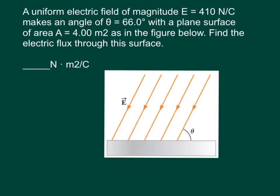The question says a uniform electric field of magnitude E equals 410 newtons per coulomb makes an angle of 66 degrees with a plane surface of area A equals 4 meters squared, as in the figure below. Find the electric flux through the surface.